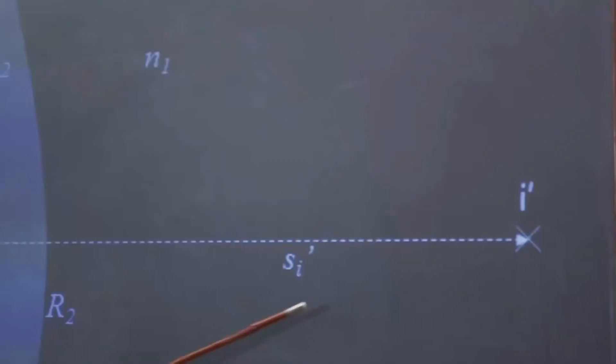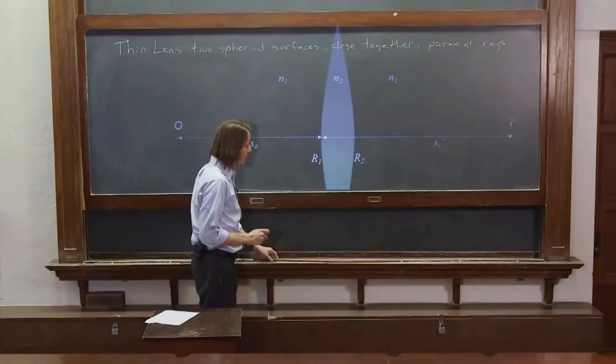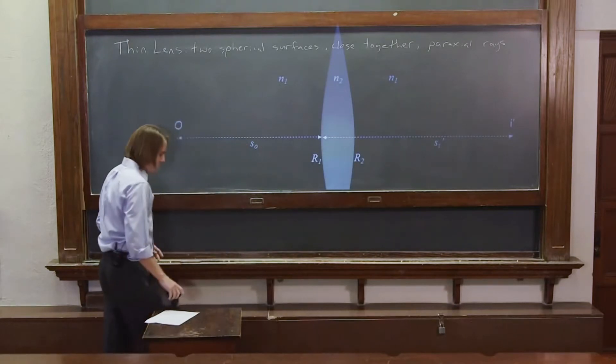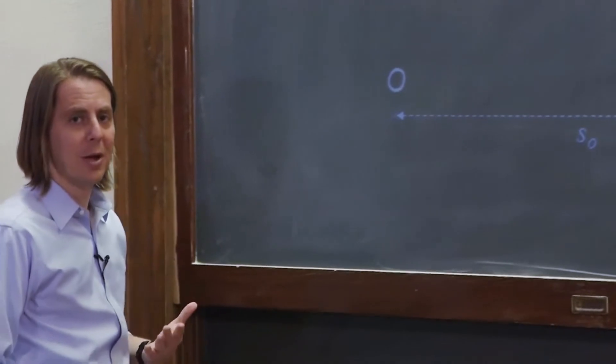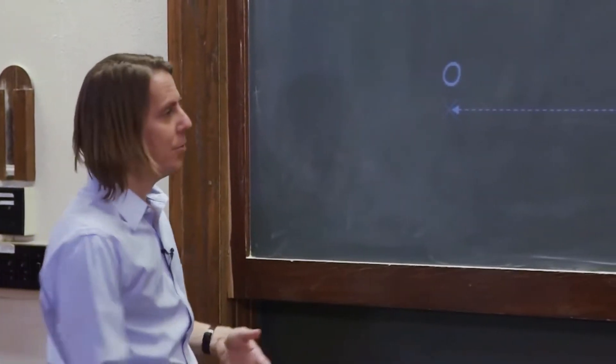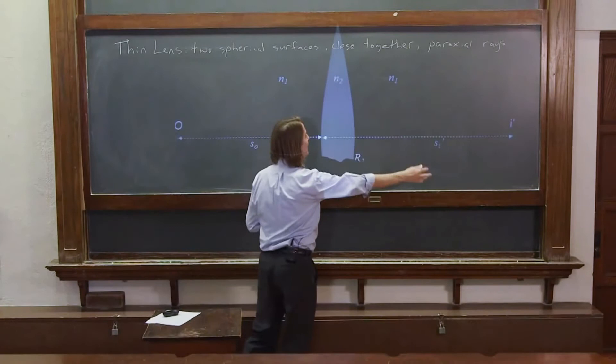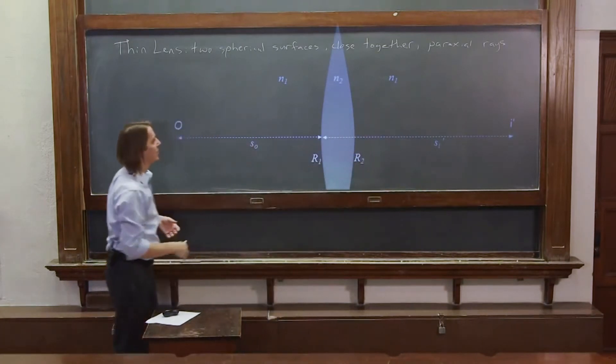We'll call it I prime and it's at a distance, an image distance SI prime. And the reason we call those prime is those aren't real. That's an intermediate image that we're going to think about that's going to help us solve the problem. So we're going to have an intermediate image and it's going to act like an object for the second surface.